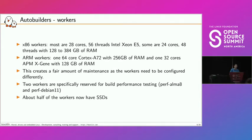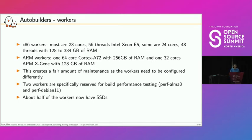Most x86 workers have 28 cores (56 threads) — Intel Xeon E5. Some have 24 cores (48 threads), and we even have two workers with only 12 cores and 24 threads. RAM ranges from 128 to 384 GB. We have two ARM workers: one with 64 Cortex-A72 cores and 256 GB RAM, another with 32 cores and 128 GB RAM. New ARM workers donated by ARM will be added to the pool soon.